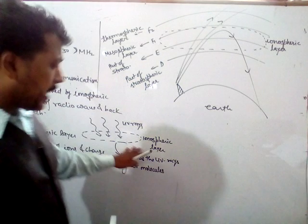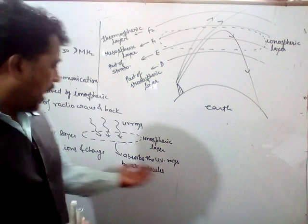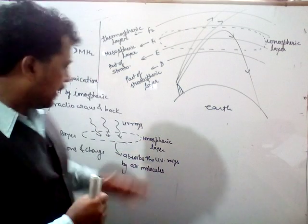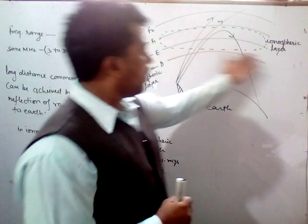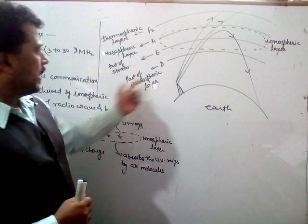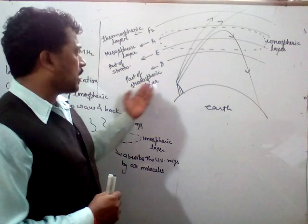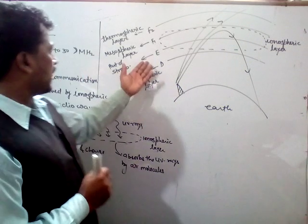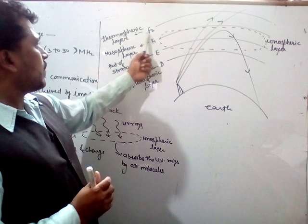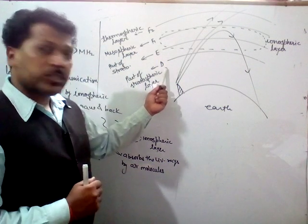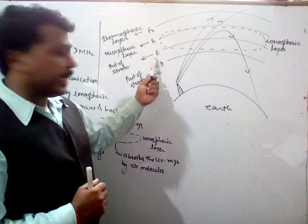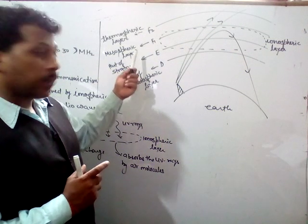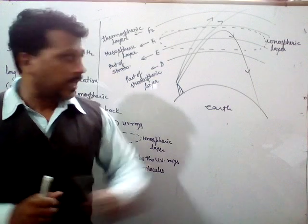In the ionospheric layer, this layer absorbs the maximum part of the ultraviolet rays by the air molecules. This ionospheric layer is formed by some parts: D, E, F1, and F2. The D part is part of the stratospheric layer, E is also part of the stratospheric layer, F1 is the mesospheric layer, and F2 is the thermospheric layer.